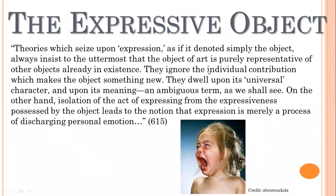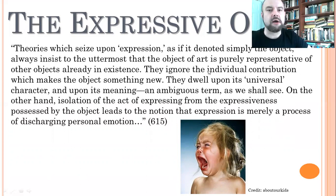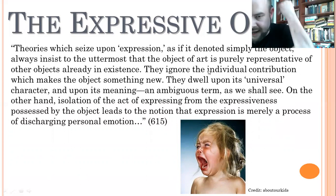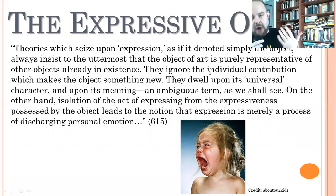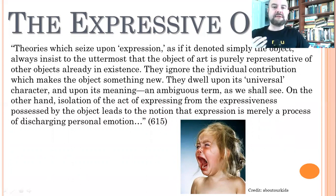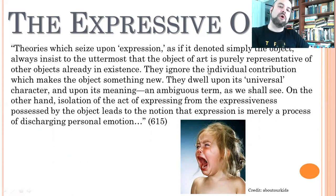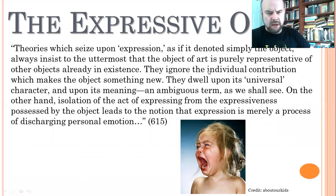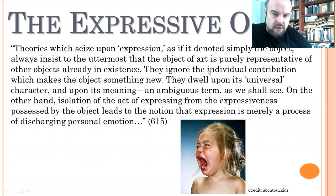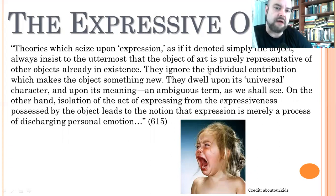Now we move to Chapter 5 on the expressive object. If an artistic object is the result of a deep emotional impulse channeled through art, then the object created from that inspiration is an expressive object for Dewey. If it's a good work of art, it will have that effect on other people — when they see it, they'll draw from it a similar emotion.